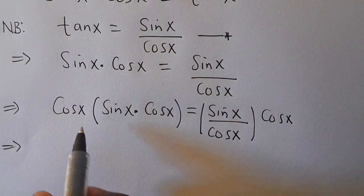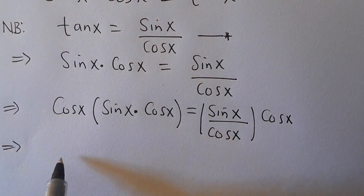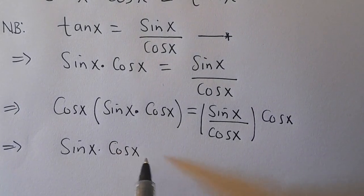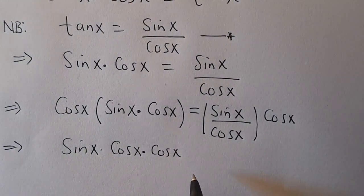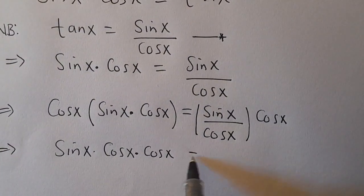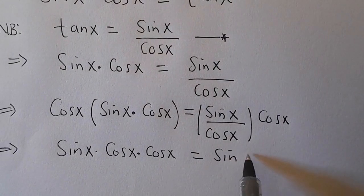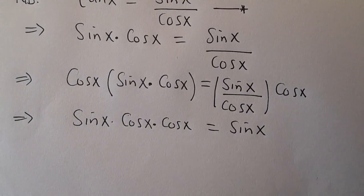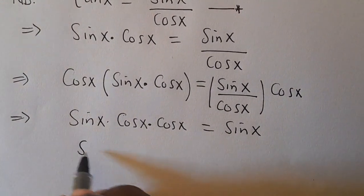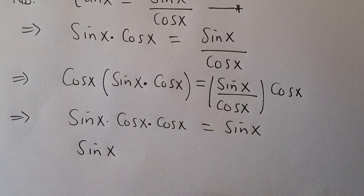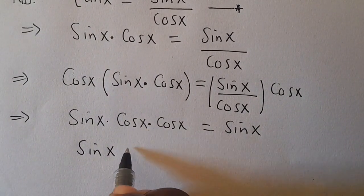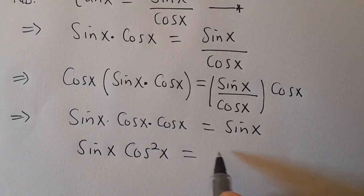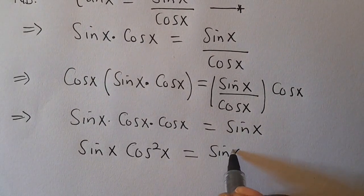This implies we have sin(x)·cos(x)·cos(x) on the left. So we can write sin(x)·cos(x) multiplied by cos(x), which gives us sin(x)·cos²(x) equals sin(x).